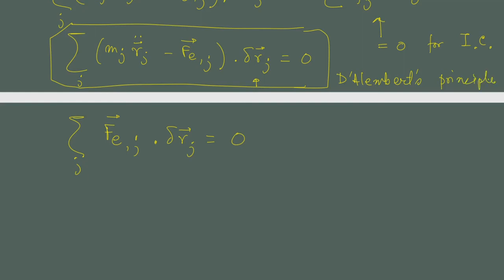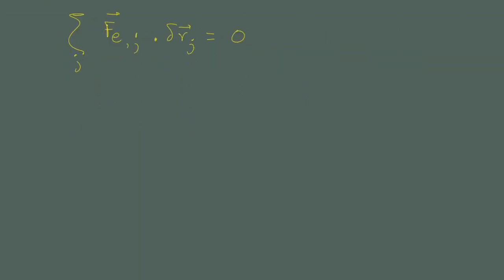D'Alembert's principle was first proposed by Bernoulli, and then D'Alembert showed that it is possible to extend the principle of virtual work — which applies for static equilibrium — to a set of moving particles by including an inertial component. You simply add the mass times acceleration part to get a similar equation for dynamical particles. It is popularly known as D'Alembert's principle.